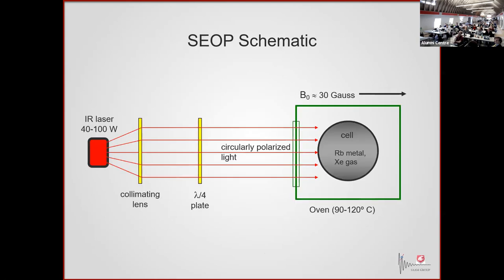Here's a crude schematic of what the setup might look like. We've got a laser, a collimating quarter-wave plate that converts linearly polarized to circularly polarized light, and then a glass cell inside an oven. Modest 30-gauss magnetic fields do this. We heat the cell to get a decent vapor pressure of the alkaline metal. Once polarized, I can cool the cell down — the alkaline metal plates to the sidewalls, and the angular momentum can't come out the way it got in. So now I have a polarized nuclear magnet.